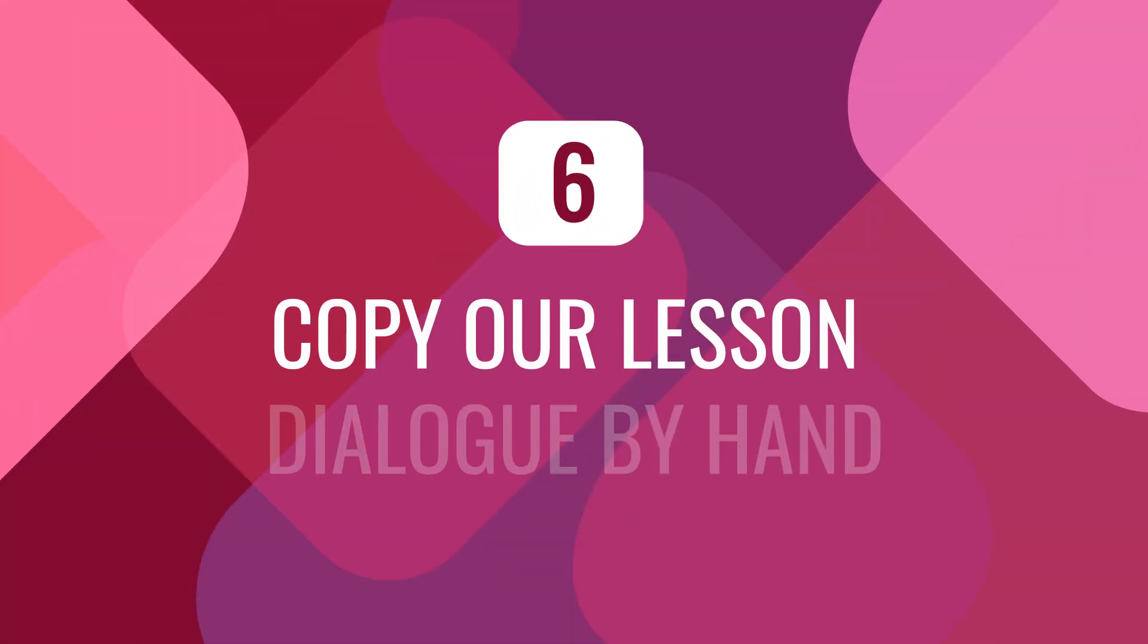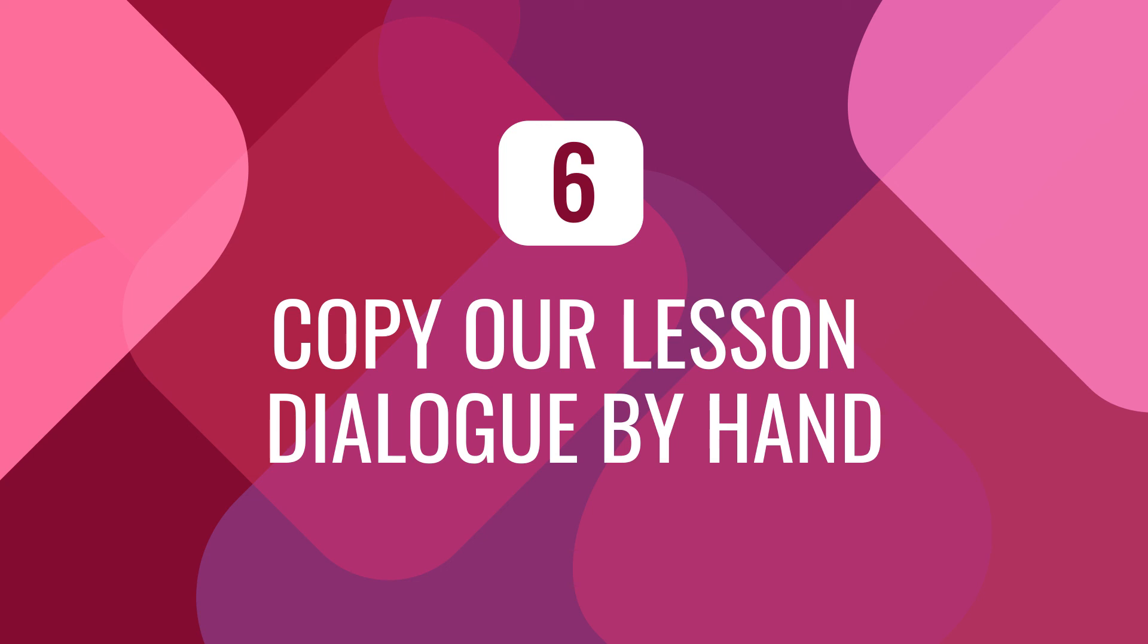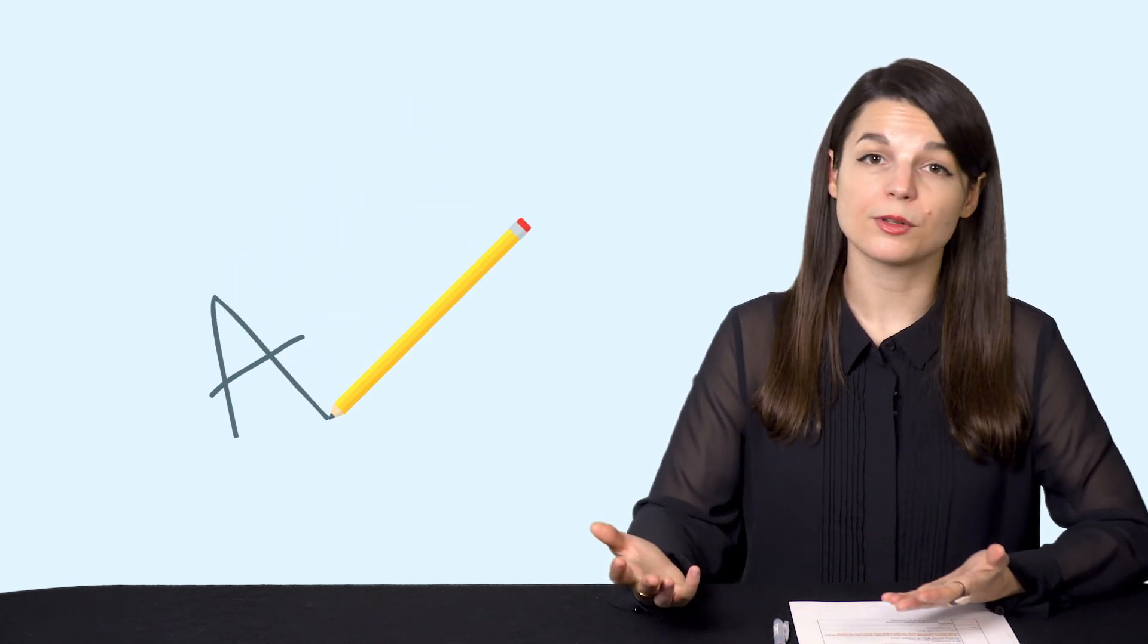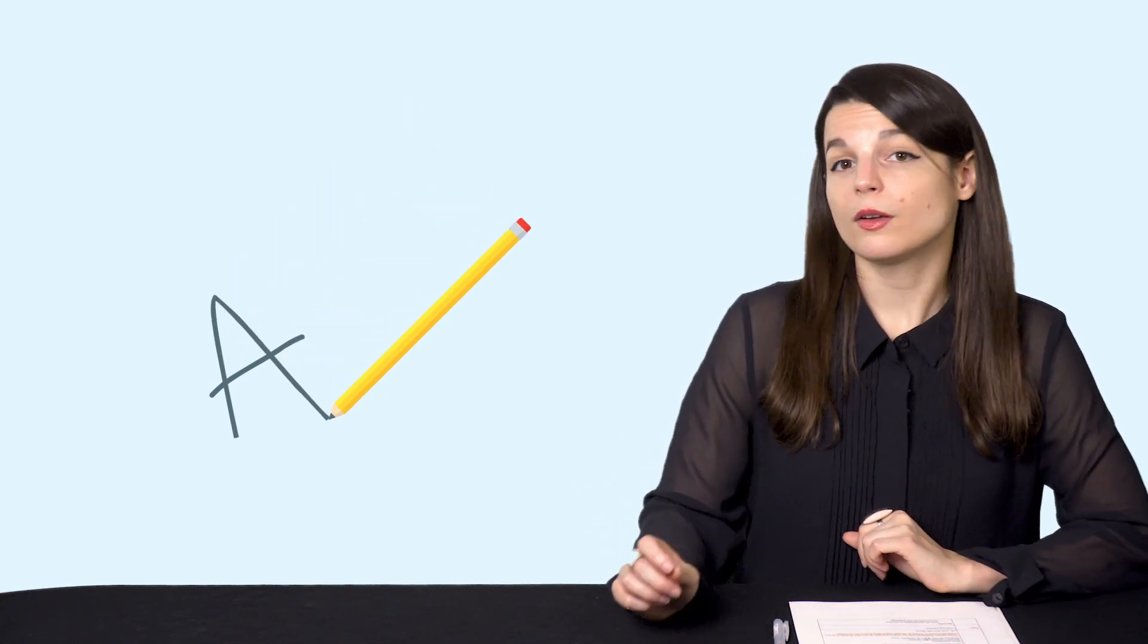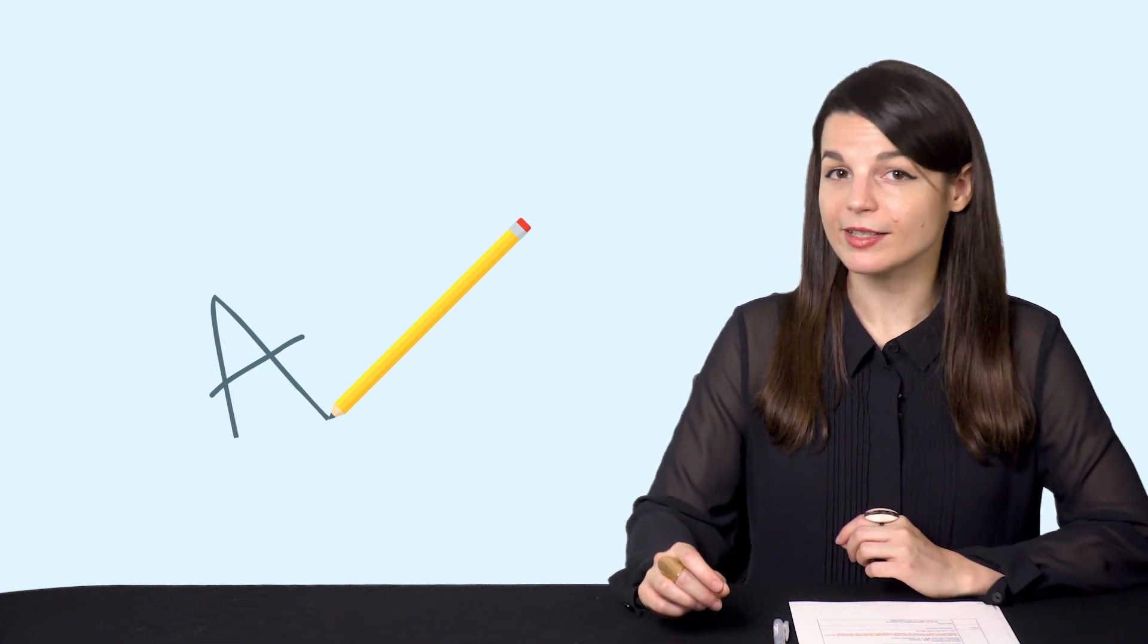Number six. For writing, try and copy out our lesson dialogue by hand. The point here is to see if you can write smoothly or not, as a way of assessing your writing. You can also do this with any textbook. You can also take a picture of your writing and send it to your Premium Plus teacher for feedback.